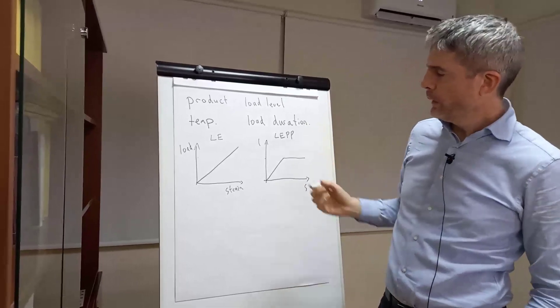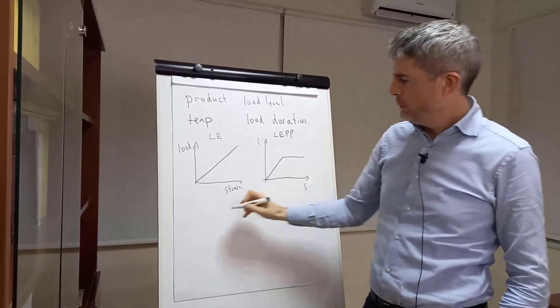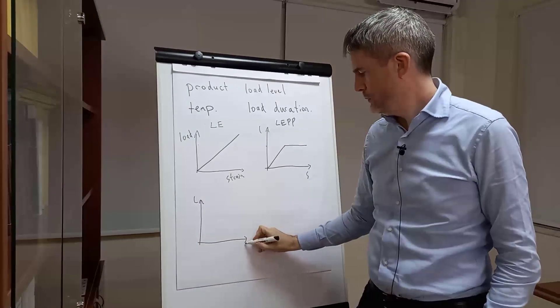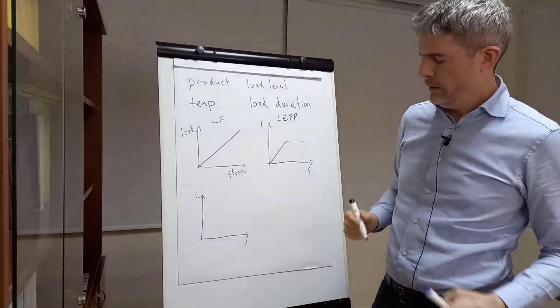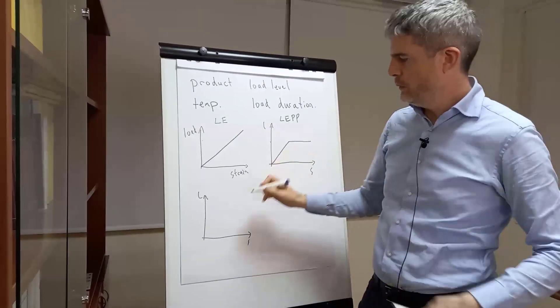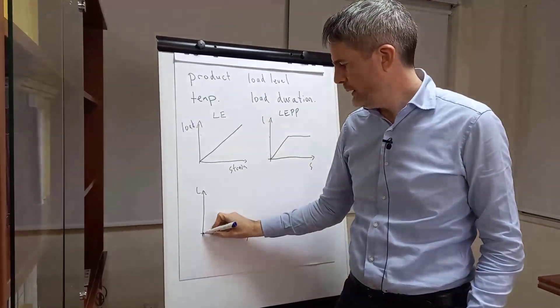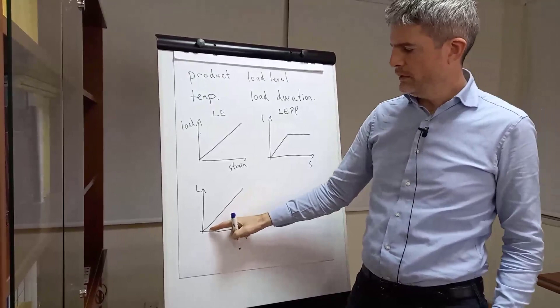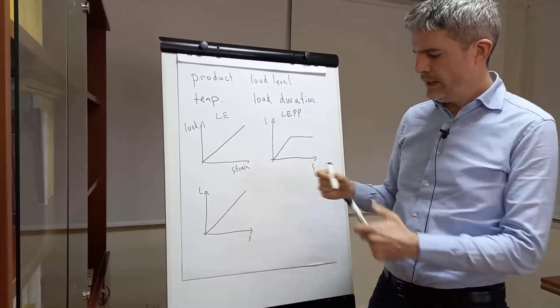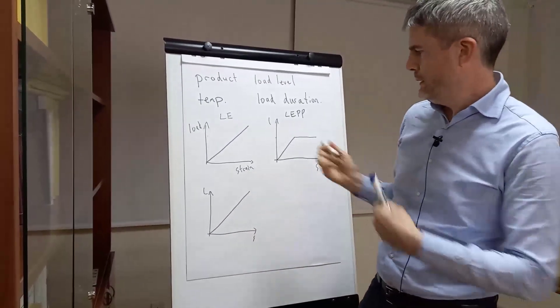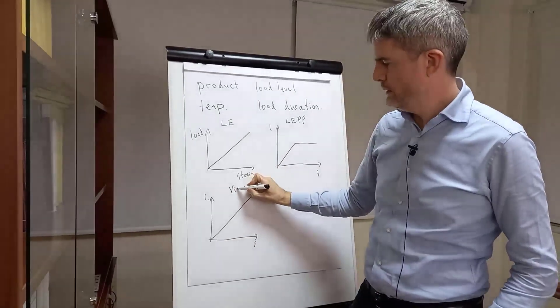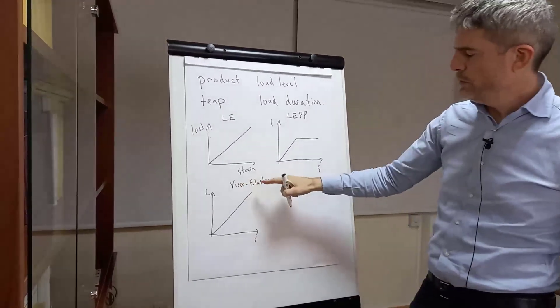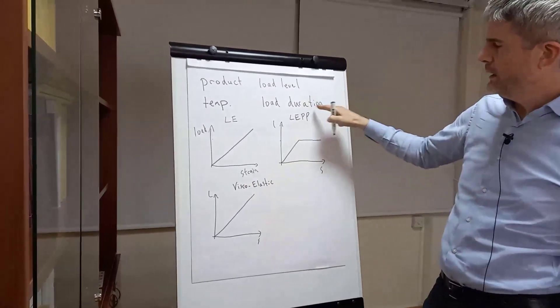Next one: load-strain. Let's make this one the visco-elastic model. So we have a certain EA value again - that's a straight line, so it's the same for all the geogrid. Visco-elastic - that means it varies with time, so it takes into account the load duration.